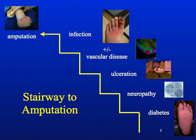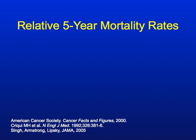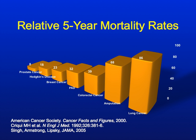So why do we care about diabetic foot amputations? Looking at the relative five-year mortality rate, amputation is second only to lung cancer in mortality rate. 68% of patients undergoing a diabetic foot amputation will be dead in five years. Also illustrated here is PAD — peripheral arterial disease — with a 32% five-year mortality rate. We now know that peripheral arterial disease is considered a coronary equivalent, and patients diagnosed with PAD need to be given intensive therapy to prevent future cardiovascular and cerebrovascular events.